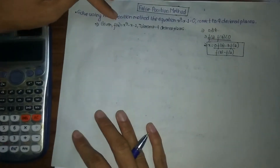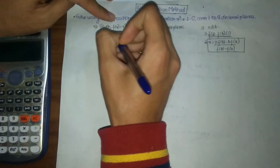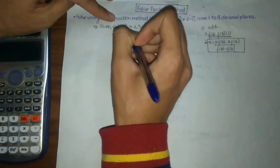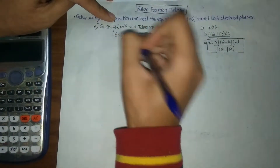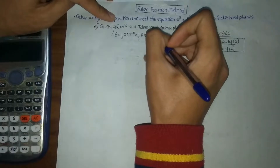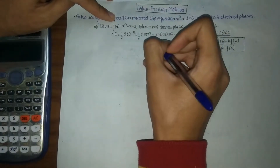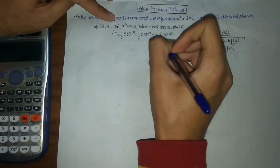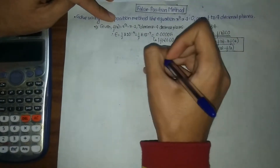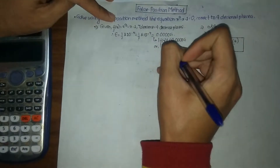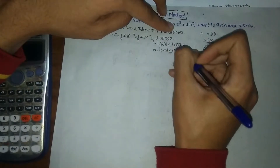Our tolerance equals 4 decimal places. Therefore our error e equals 1 divided by 2 into 10 to the power minus n, so we get 1 by 2 into 10 to the power minus 4. Here our value of n is 4, so we get 0.0005. This means our f(x) needs to be less than or equal to 0.0005, or our b minus a needs to be less than or equal to 0.0005.